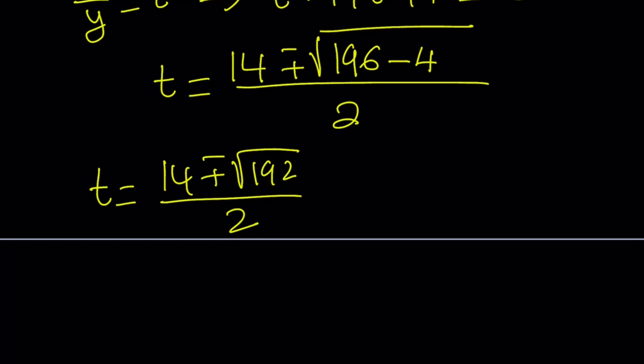192 is 4 times 48. Let's go ahead and break it down. 4 times 48. And 48 is 4 times 12. And 12 is 4 times 3. Okay, great. Let's see. Our goal here is basically to take out the largest possible perfect square. And in this case, it will be 4 times 4 times 4, which is 64.